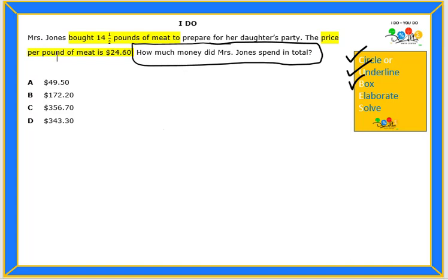Next we elaborate. Orange for the pounds of meat, and blue for the price.